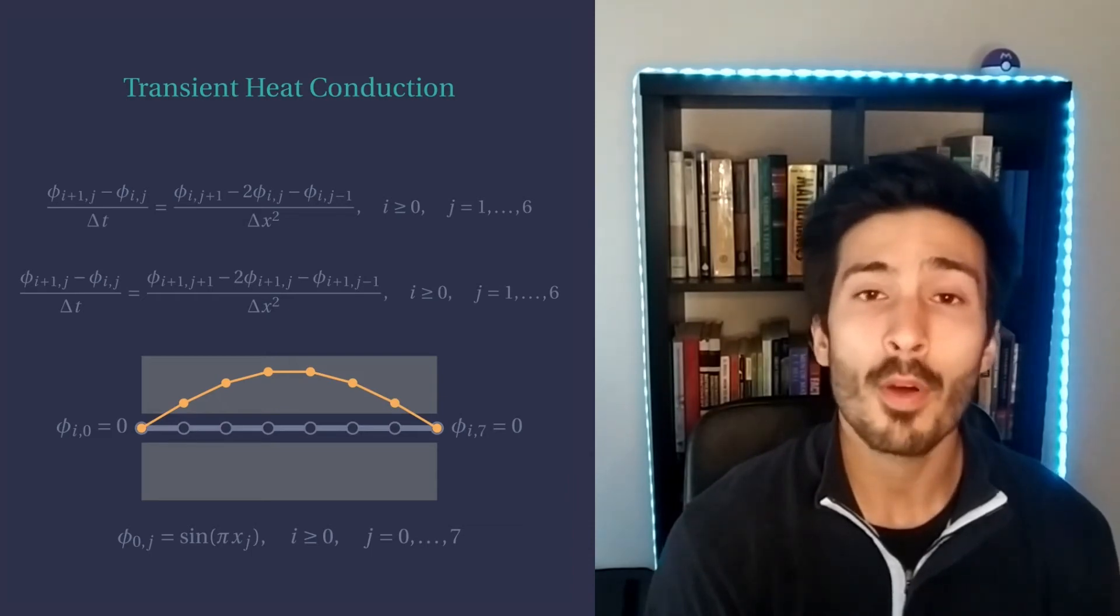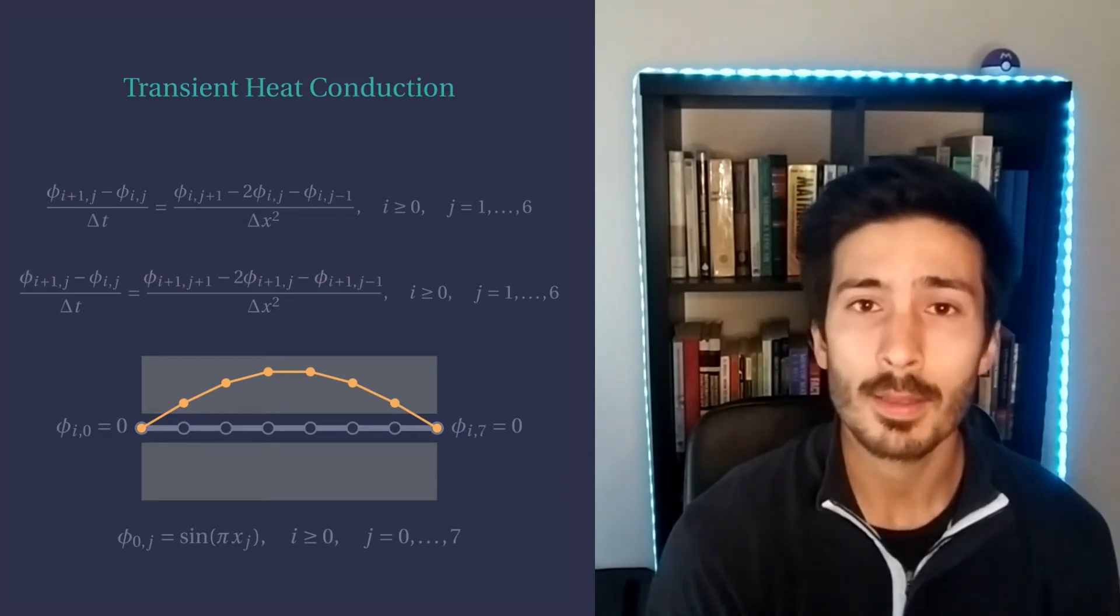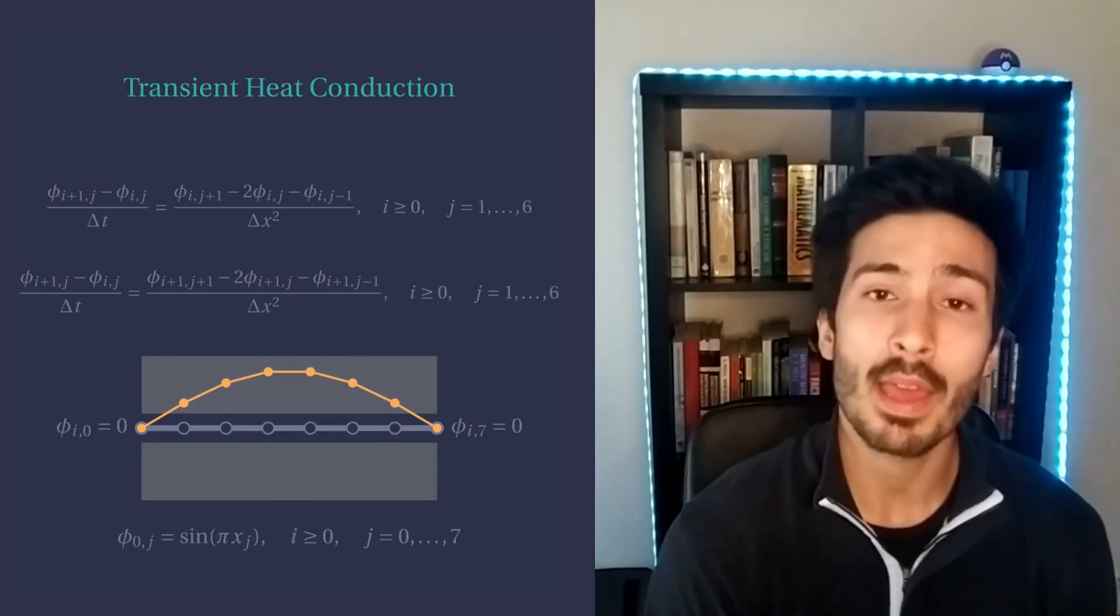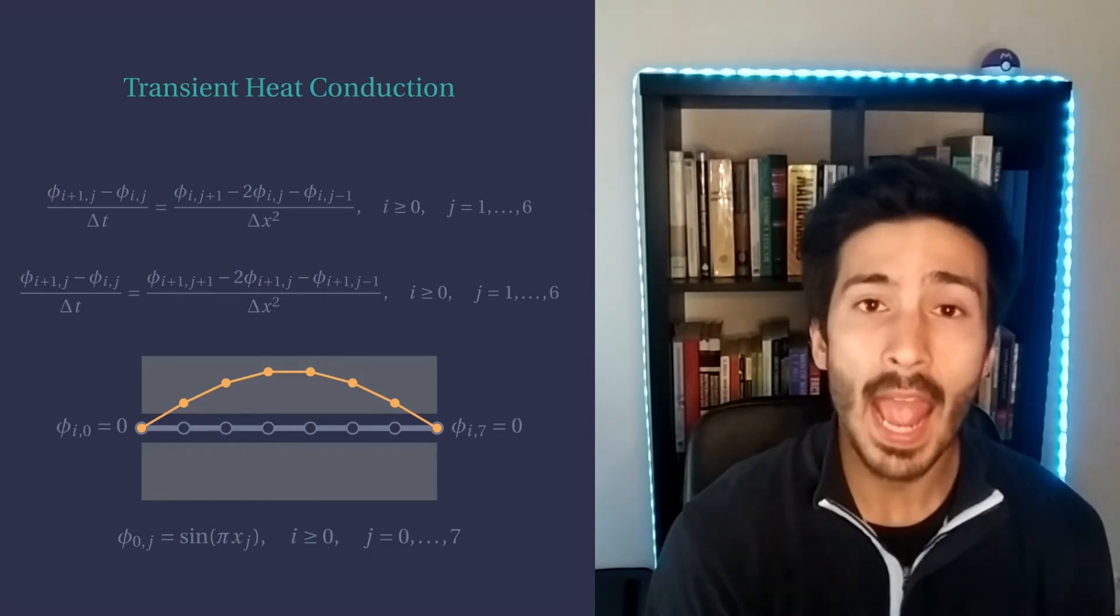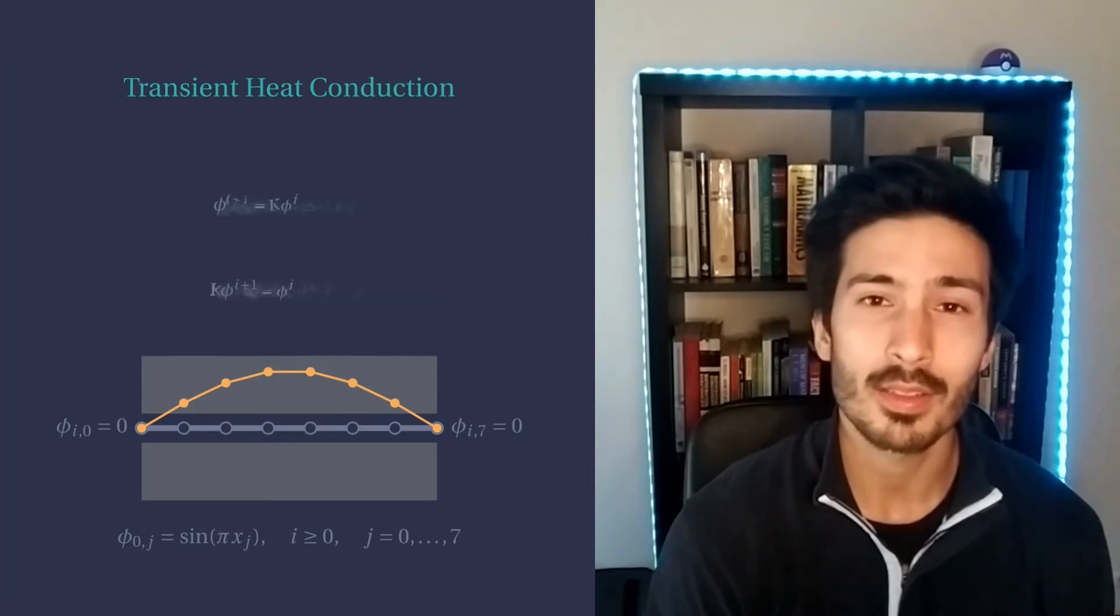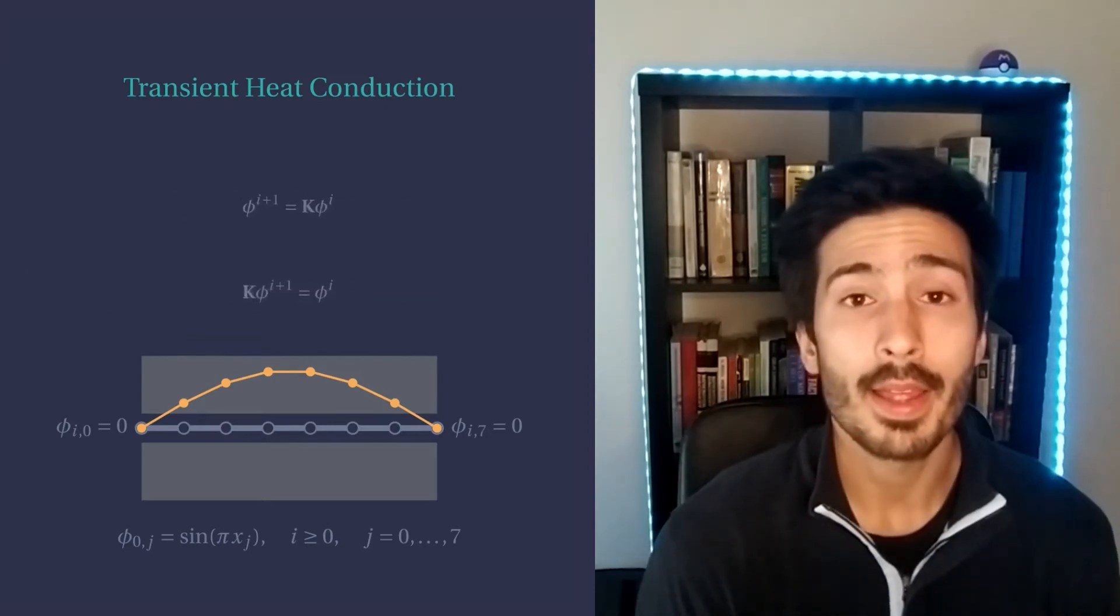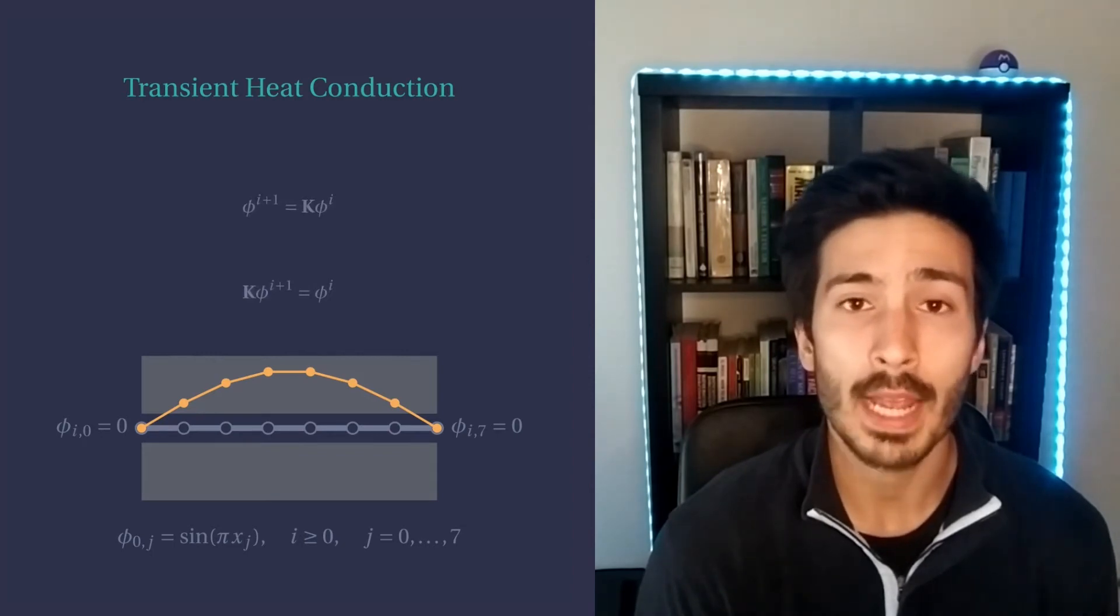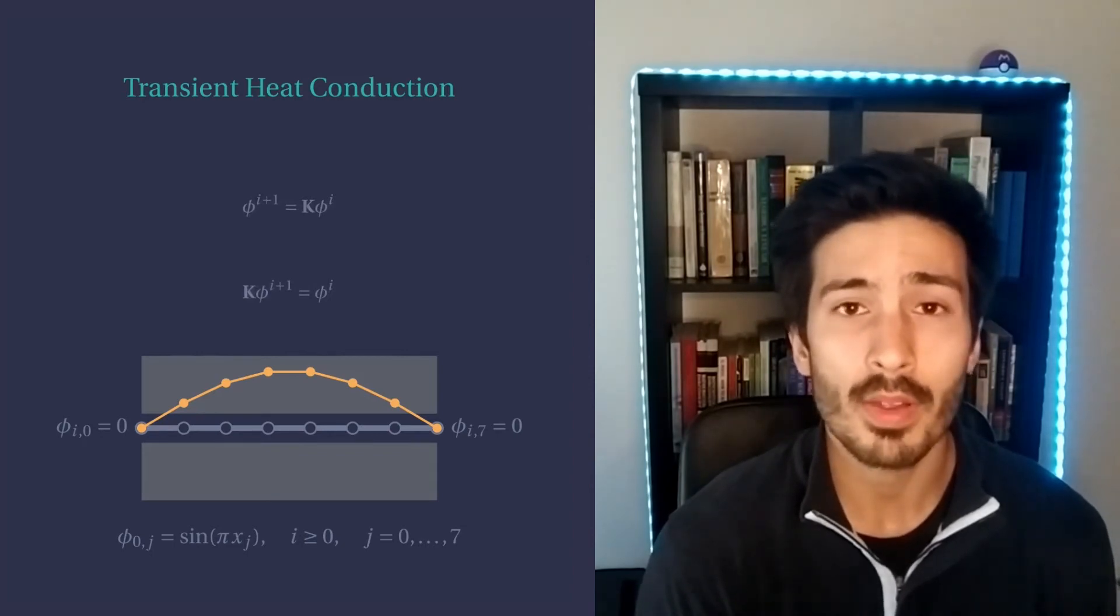But take a closer look at the formulas. The method that uses the forward difference is explicit. And what is that? It means that we can move the method forward without solving any system of equations. This is awesome. On the other hand, the method based on the backward finite difference must solve, at each time step, a system of equations.